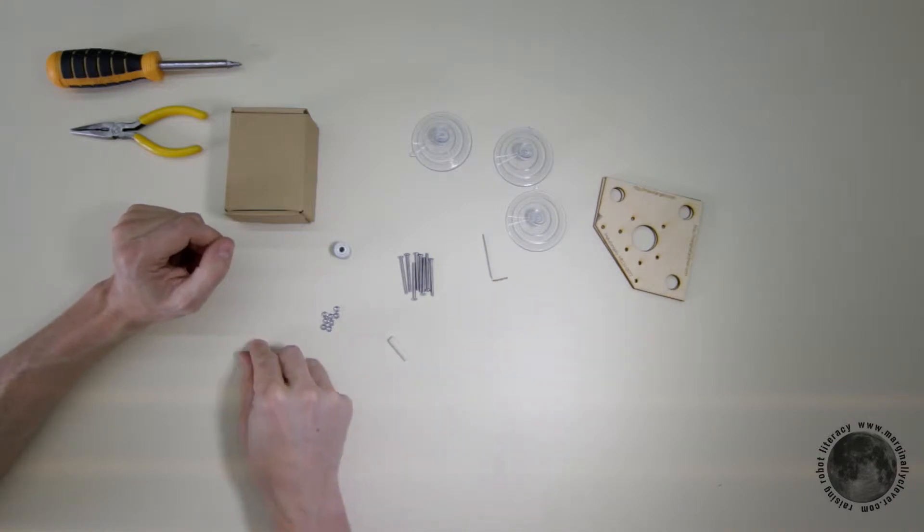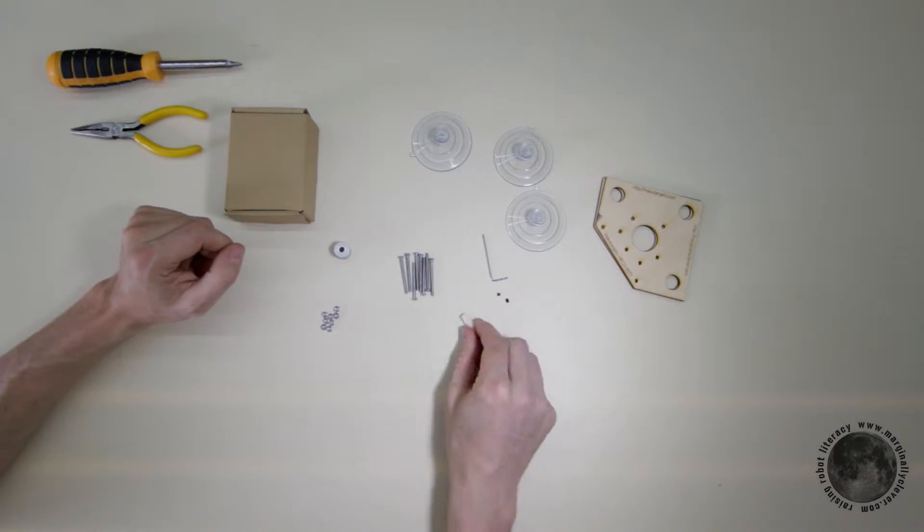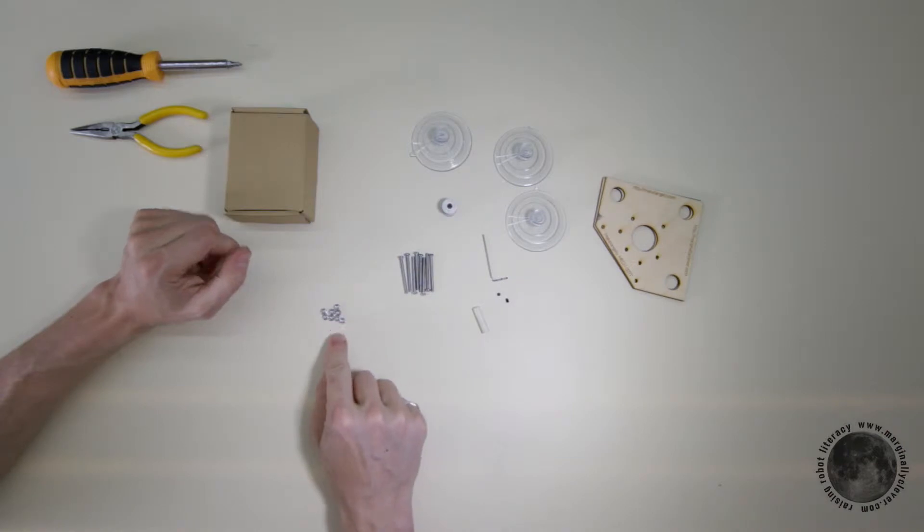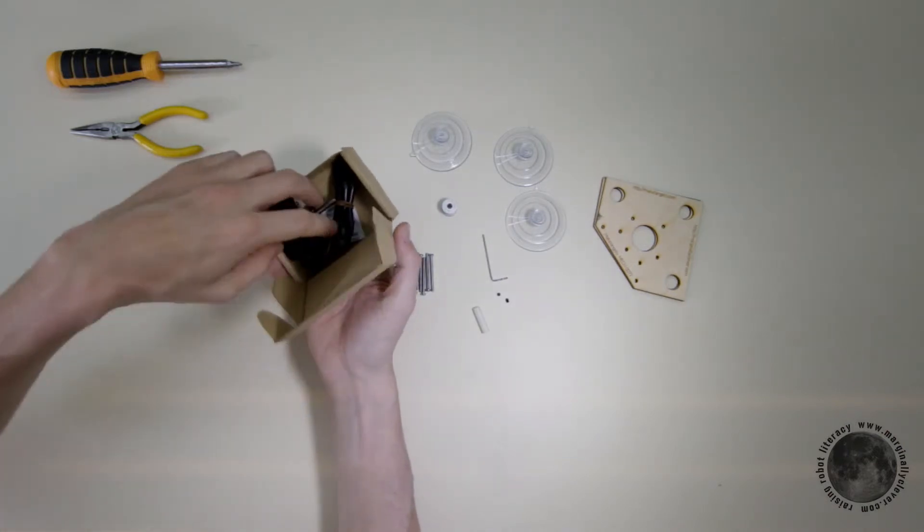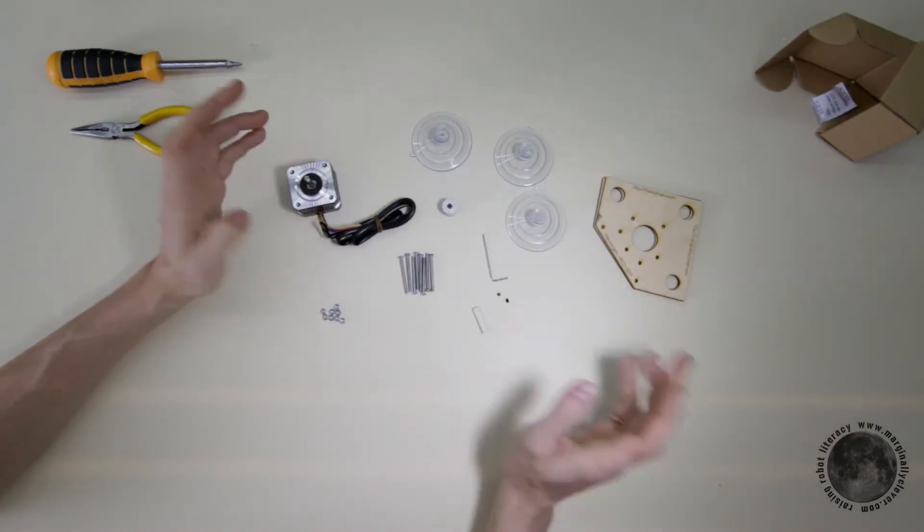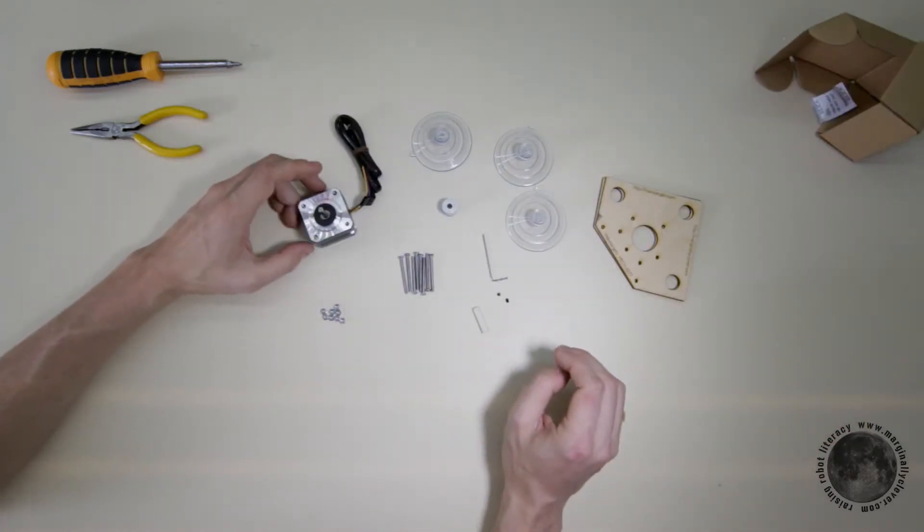an Allen key, two set screws, a spacer, eight M3x35 screws, a pulley, eight nuts, and there we go, and there's a stepper motor.